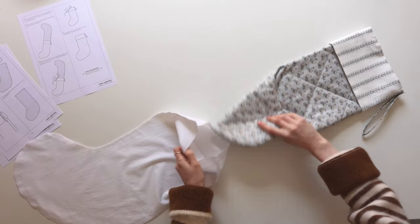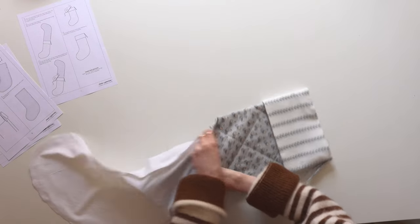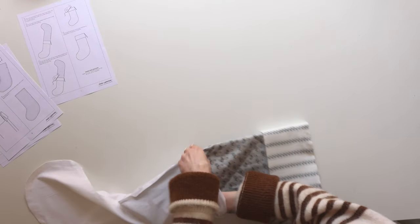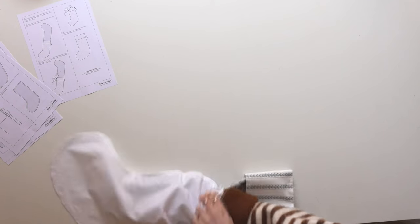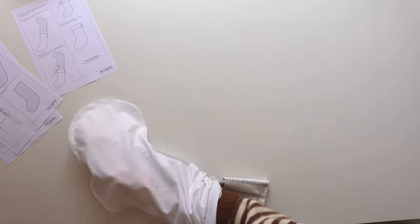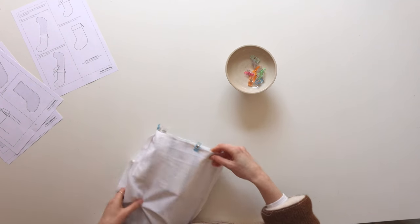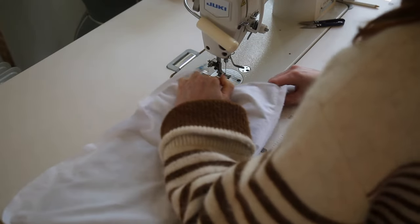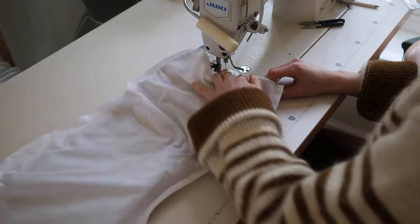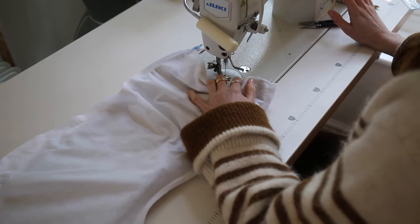We're now going to attach the lining so to do this you're going to want to put the outer stocking inside the lining, matching up the top seams and pinning all the way around. Then we'll take it over to the sewing machine and stitch all the way around with a 1.5 centimeter seam allowance.